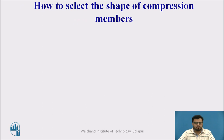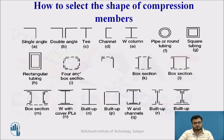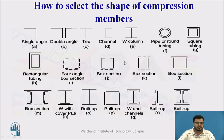How to select the shape of a compression member? We select the member in such a way that we get the maximum moment of inertia. For the same cross-sectional area, circular sections are the best sections. After that we have square tubing, and then rectangular sections.